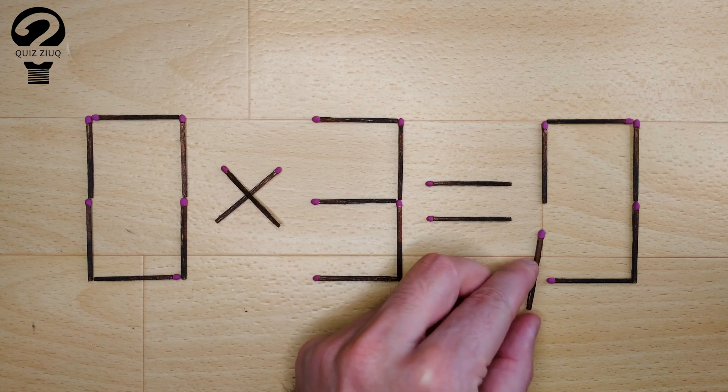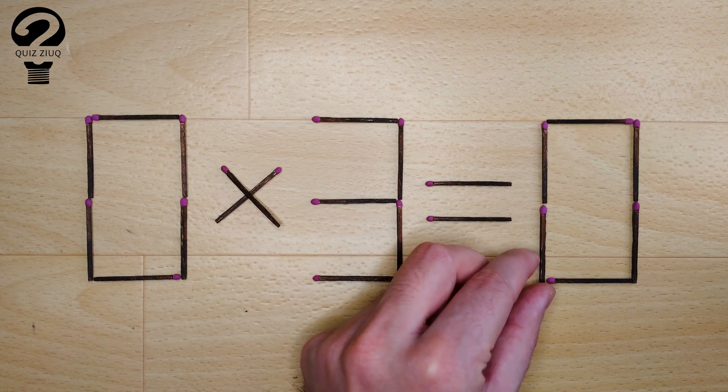0 equals 0. Our equation is correct. The puzzle is solved.